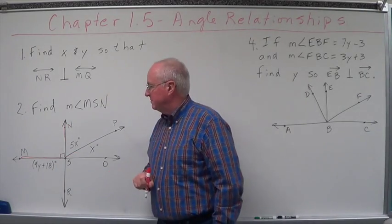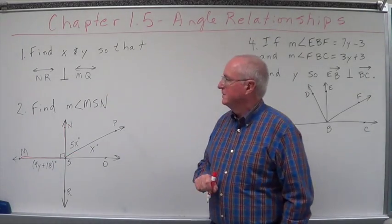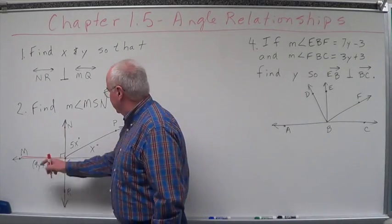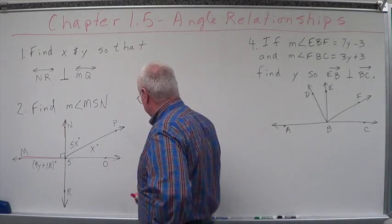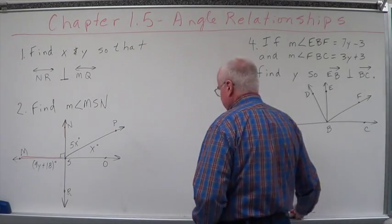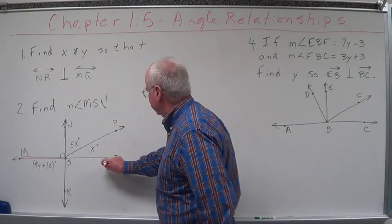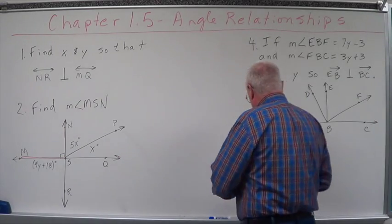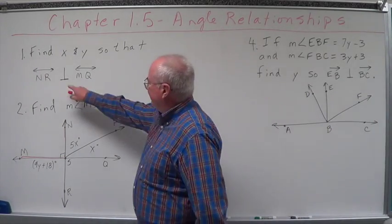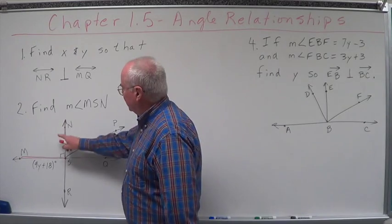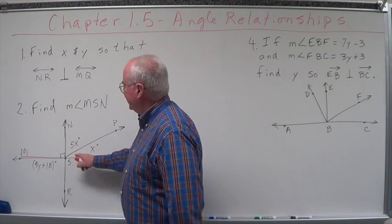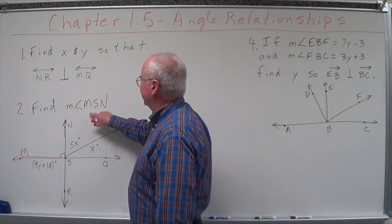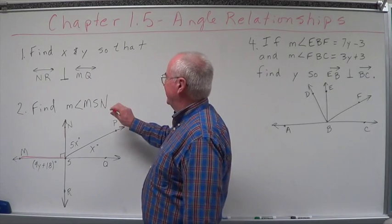What's this little symbol right there mean? Well, if NR is perpendicular to MQ — that's supposed to be a Q there, not an O — and what do we know if they're perpendicular? We know that this has to form a 90-degree angle. So then, what's the measure of this angle?